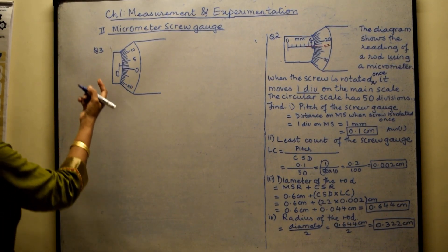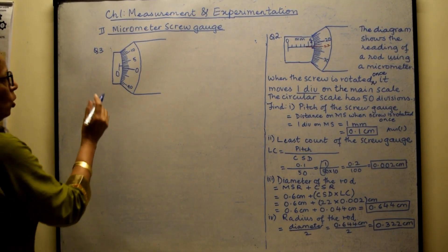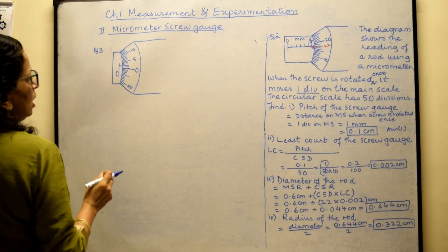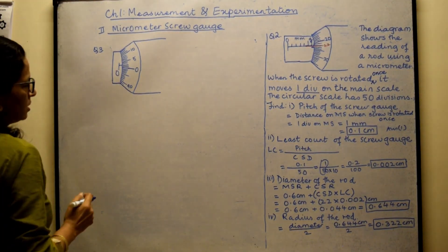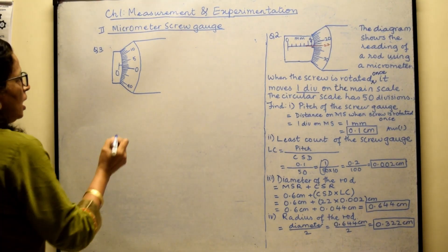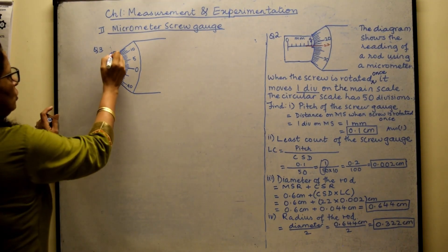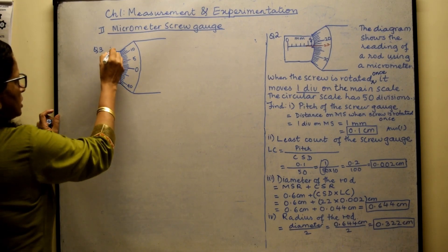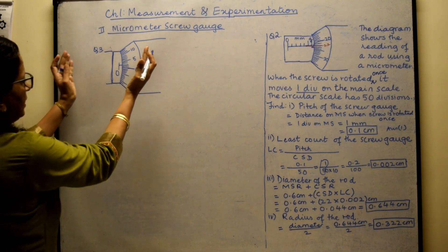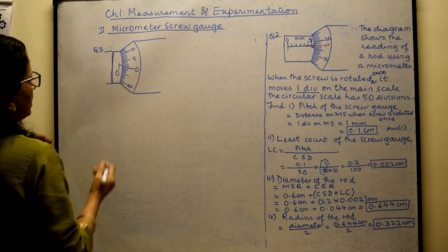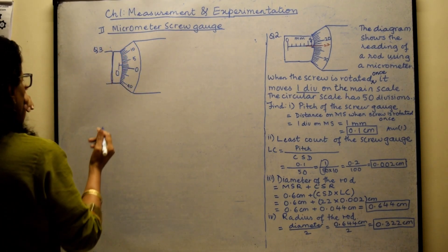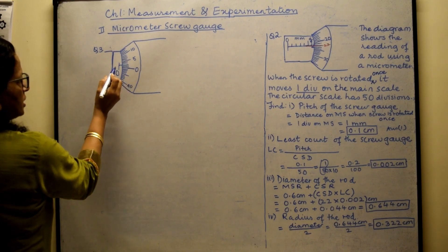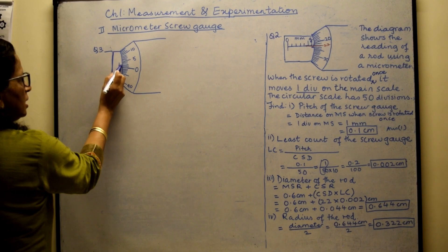Now we come to the next type of question, linked with Question 2 — the only difference is that we are going to add a zero error. When the two studs of the micrometer are touching each other, the zero of the circular scale should coincide exactly with the main scale line.